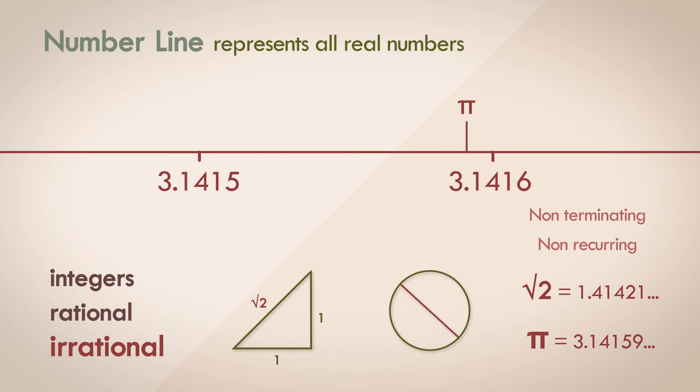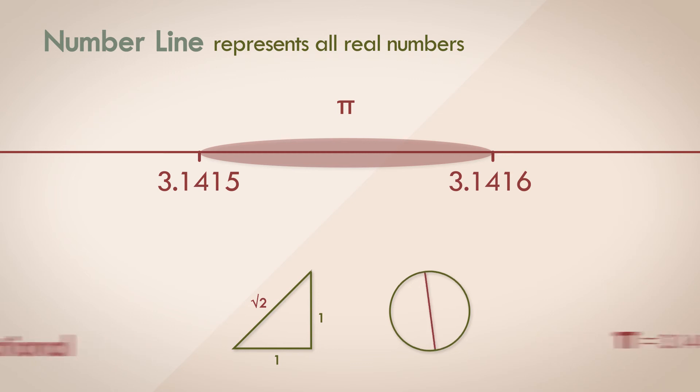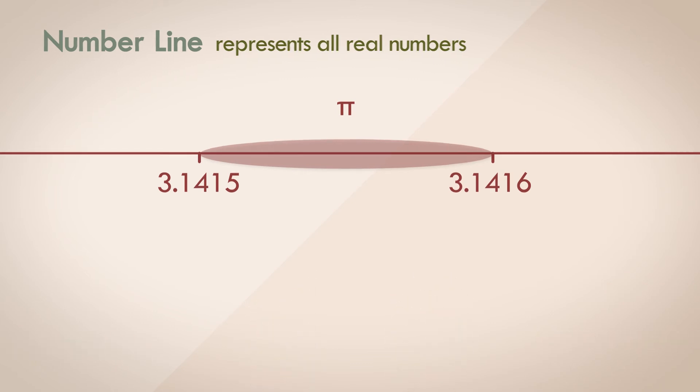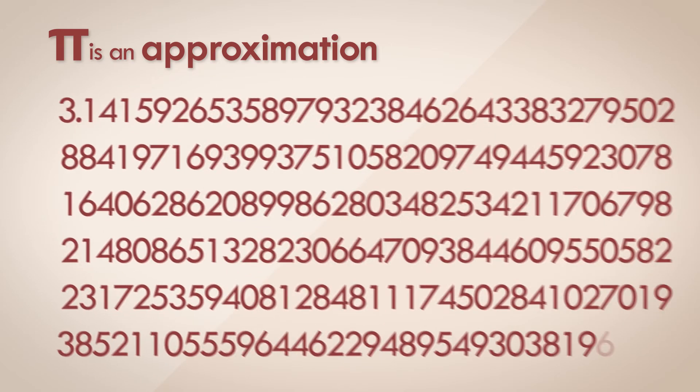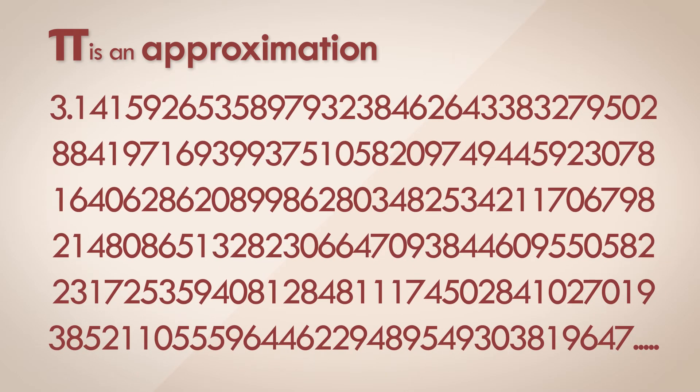But make no mistake, pi is somewhere on this line. Somewhere. It has to be, because this is the number line of all real numbers. But what I am hinting at is, when you are writing the value of pi down on a piece of paper, you are always writing an approximation of it. Be it 3.14, or 3.14 followed by 10,000 digits. The precision may vary, but it's still an approximation.